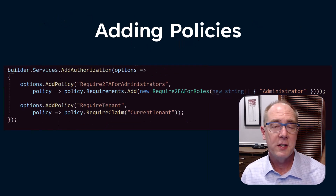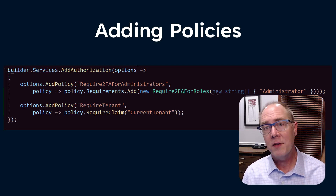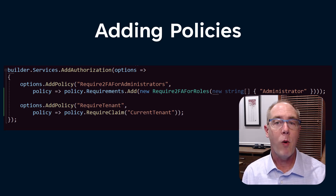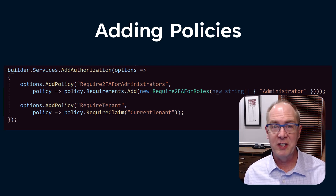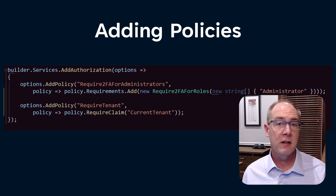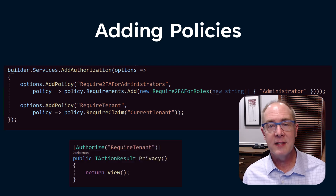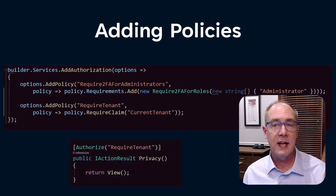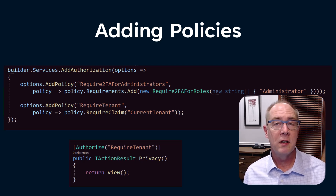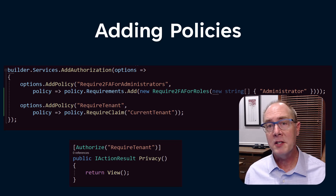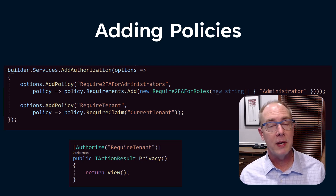To make authorization work, we need policies — sets of authorization requirements. I'm going to create a policy called RequiredTenant that simply looks for a claim called CurrentTenant. If the user has a CurrentTenant, they'll pass the authorization check. Once I've defined this policy, I can apply it to a controller or an action. In this case, I've put that check on the privacy page. As a user, when I attempt to access that page, I have to have a tenant or I won't be able to see the page.